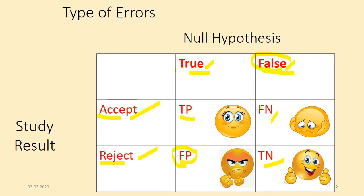This false positive is called alpha error or type 1 error. False negative is called beta error or type 2 error. So, alpha error is rejecting null hypothesis when it is actually true. Beta error is accepting null hypothesis when it is actually false.